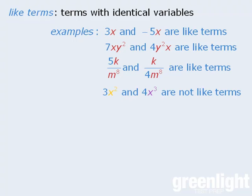Conversely, 3x² and 4x³ are not like terms since the variable in the first term is x² and the variable portion of the second term is x³.